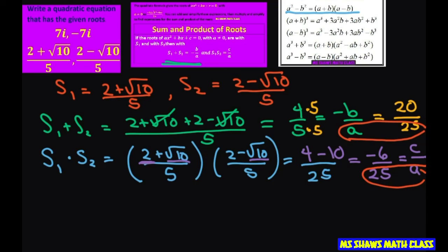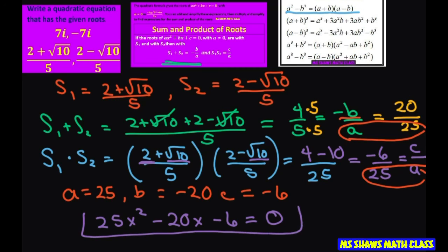So now we do have our a equals 25. Our negative b equals 20, so b equals negative 20. And c equals negative 6. So now we can write out our quadratic equation. That's going to be 25x squared minus 20x minus 6 equals 0. And that is your final answer.